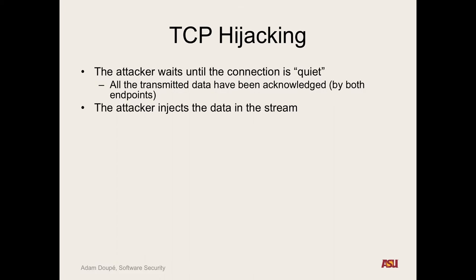So then we inject our data into the stream. Let's say we correctly guess the sequence number. What's going to happen now to both endpoints and their view of this TCP connection? They're going to be desynchronized. If I inject at sequence number 10 — the side that received it acknowledges it — the next time the other side tries to talk, it sends data at sequence 10, and the other side says, I already got this, I'm expecting 20, what are you doing? So they can never talk to each other. We've essentially desynchronized the state of the TCP connection on both sides — their current sequence and acknowledgement numbers no longer match.